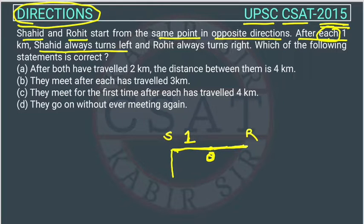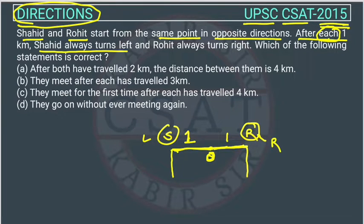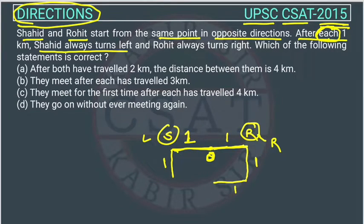Rohid will take a turn to the right after one kilometer. So dono ek kilometer ke baad — Rohid right mein turn lega aur Shahid left. After the right turn, Rohid walks one kilometer and takes another turn. Similarly, Shahid walks one kilometer and then again takes a left turn, moving this side.